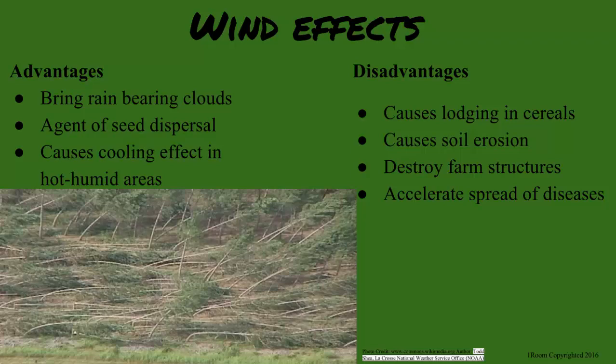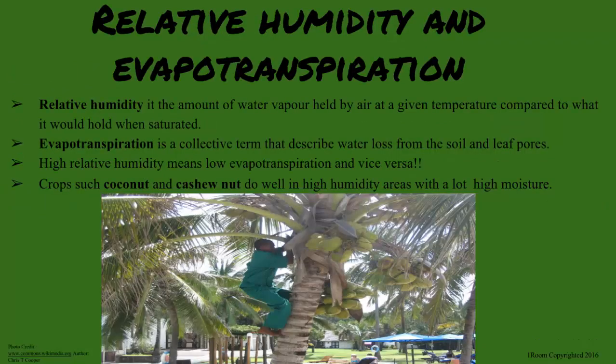Evapotranspiration? Before I explain that, you must know what relative humidity is. Relative humidity is the amount of water vapor held by the air at a given temperature compared to what it would hold when it is saturated. Yes, I learned about this. Evapotranspiration is a collective term that describes the water loss from the soil and leaf pores. High humidity means low evapotranspiration. Correct. Along the coast of Kenya, the relative humidity is higher, and plants such as coconut and cashew nuts do well with a lot of moisture.